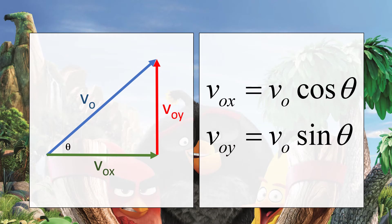Since the projectile was launched at an angle, the velocity must be broken into two components. In finding the initial horizontal velocity, we have: initial velocity times cosine theta. While for the initial vertical velocity, we have: initial velocity times sine theta.